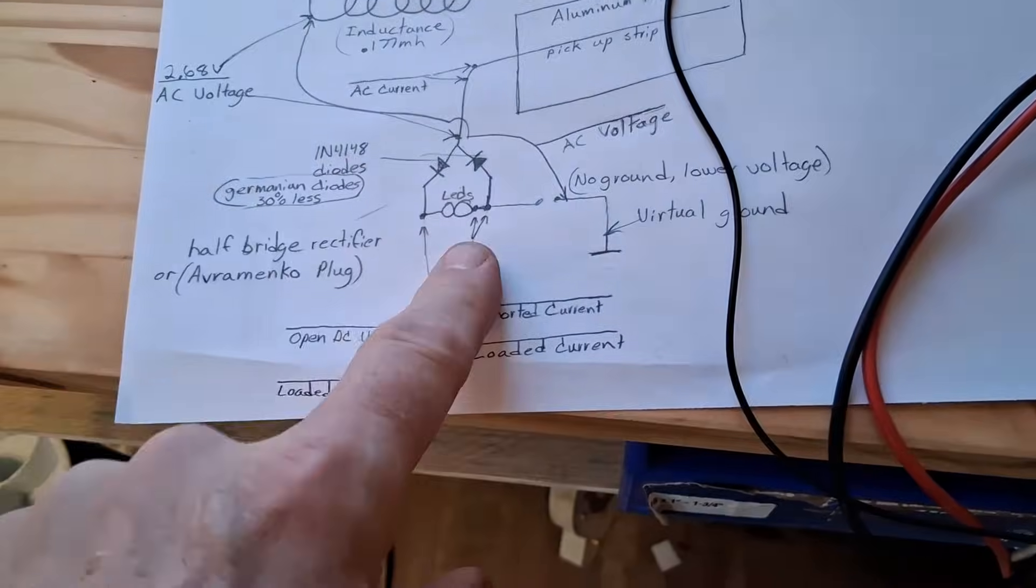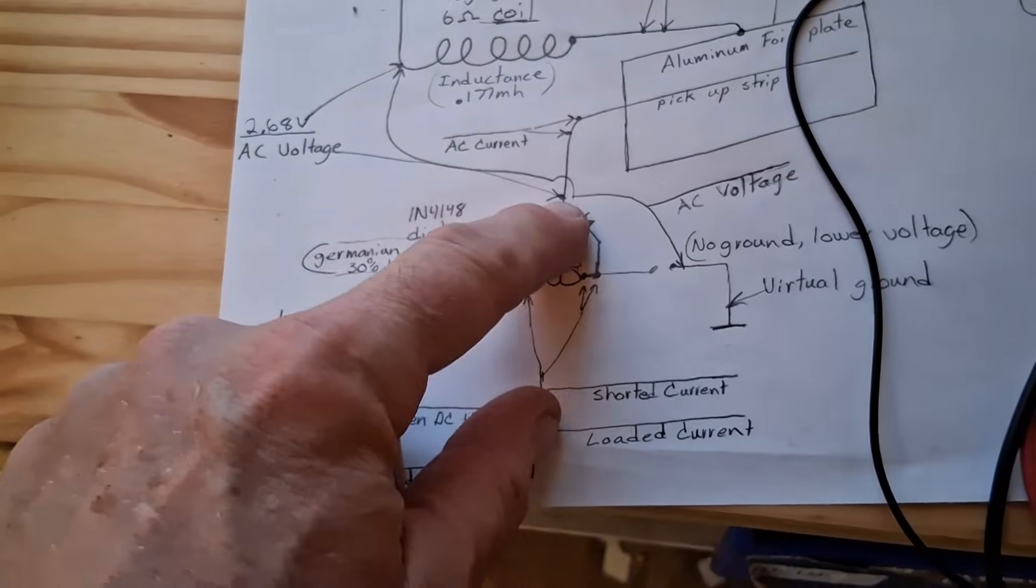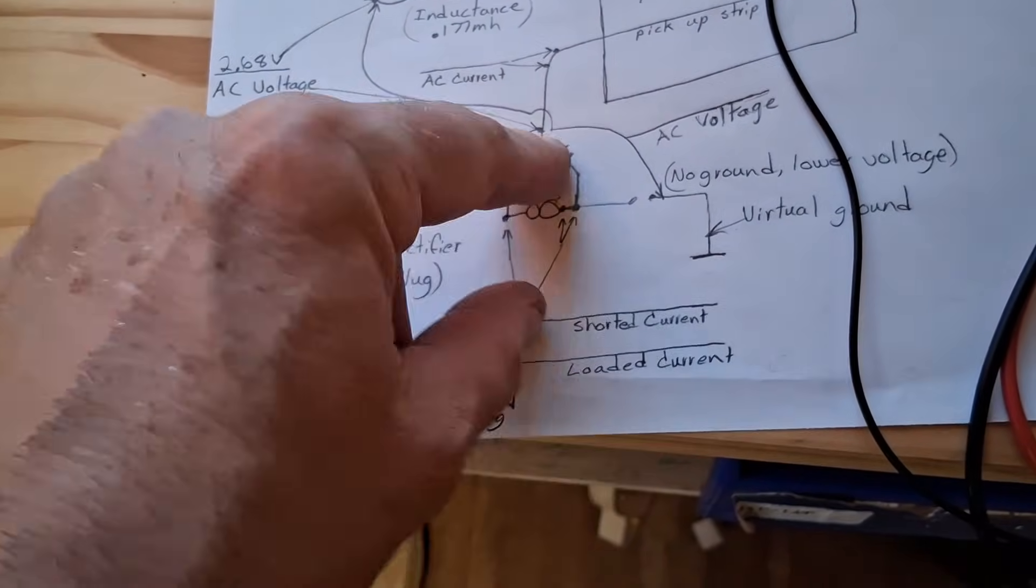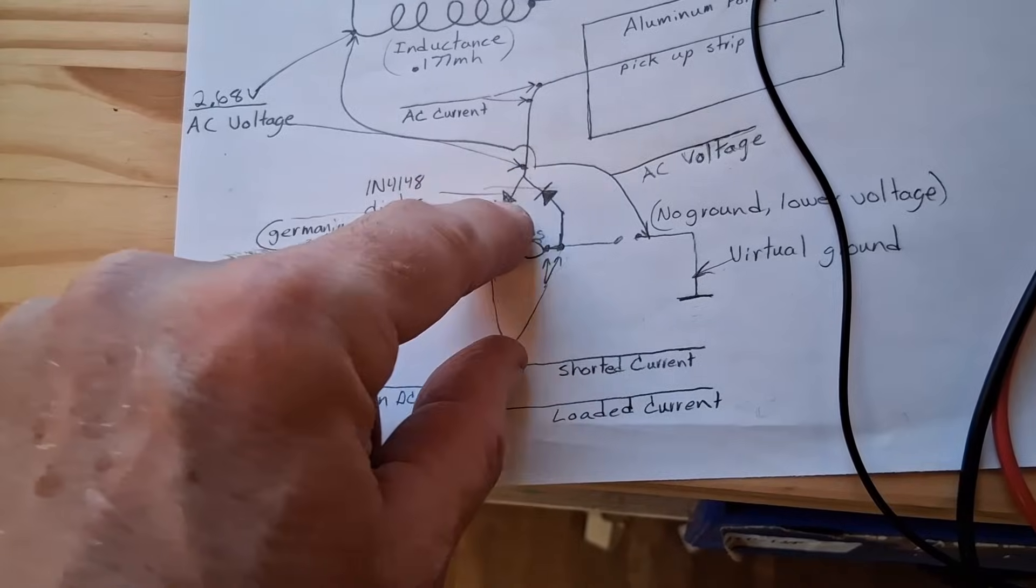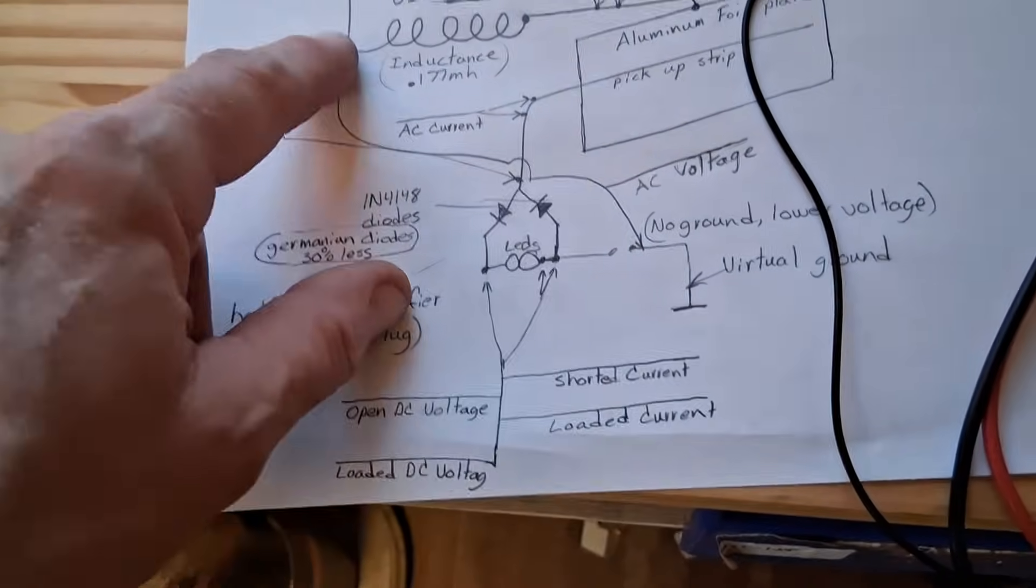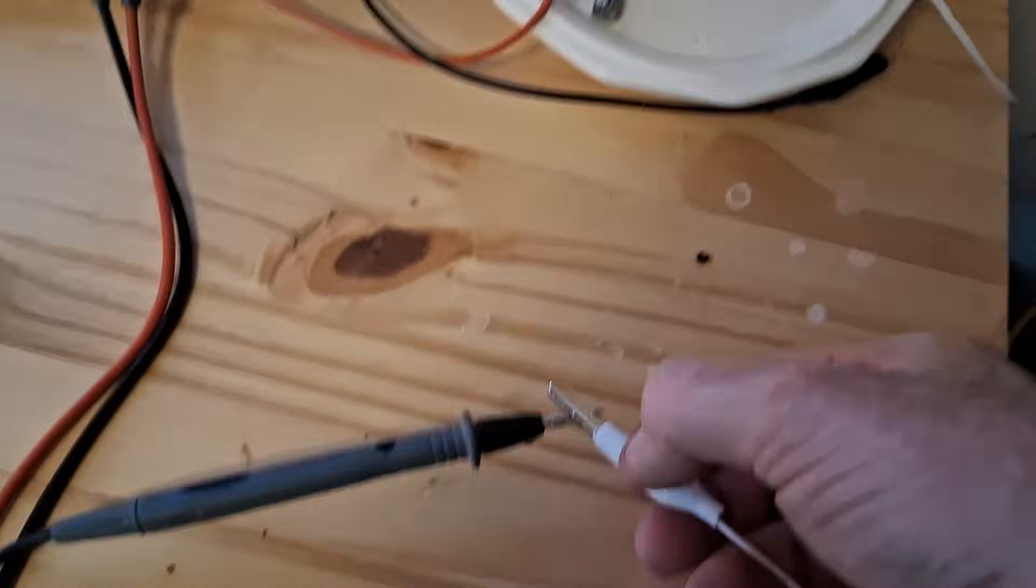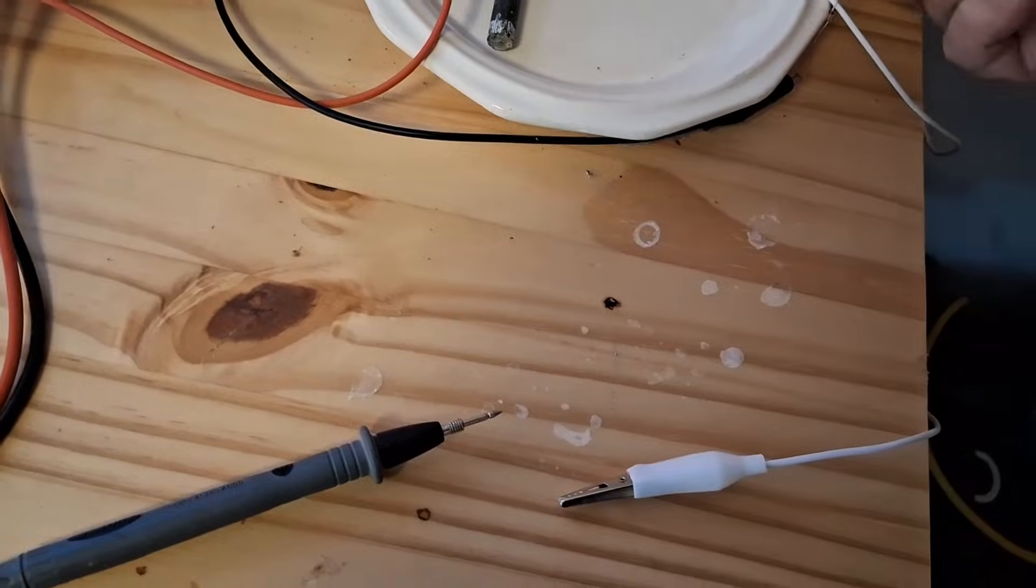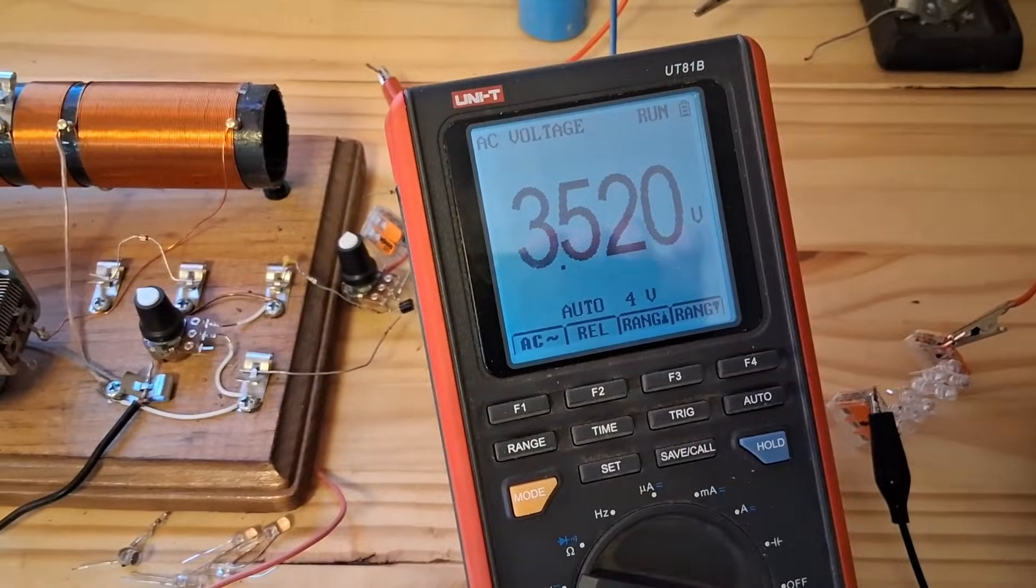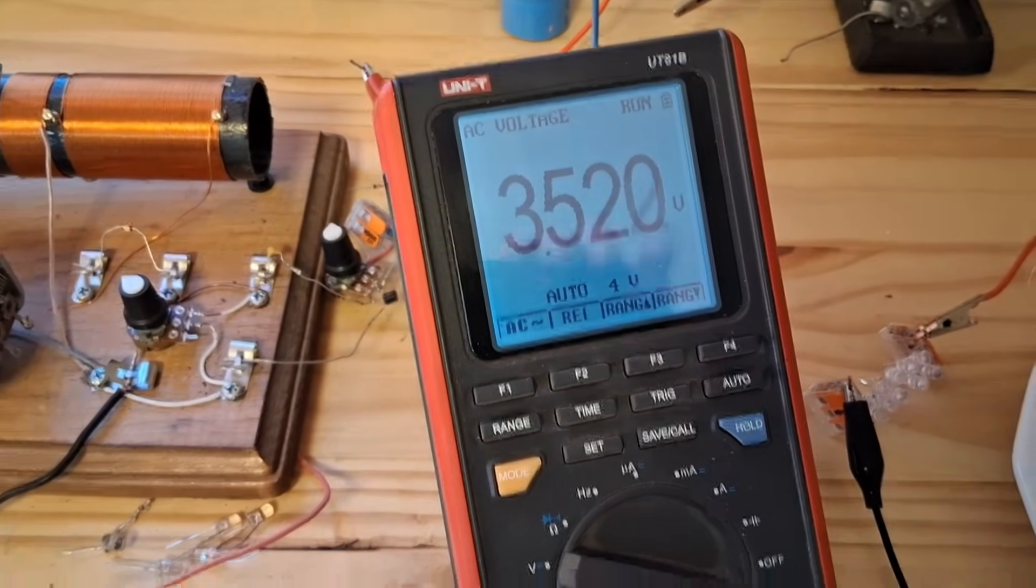I also want to check the AC voltage probably from here to here in case there's no ground attached. I'll get an AC reading right where before these diodes right off this pickup strip and the antenna. So that's right off the pickup strip, virtual ground disconnected, and I have 3.52 volts there.